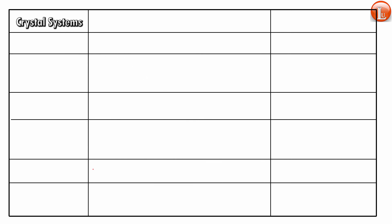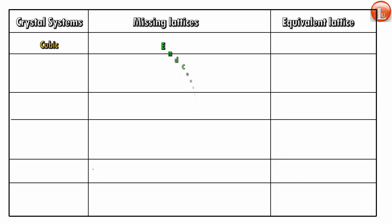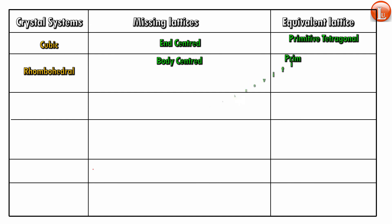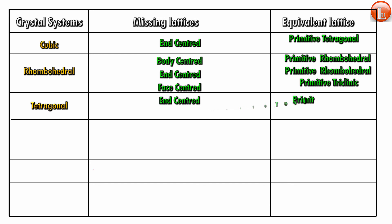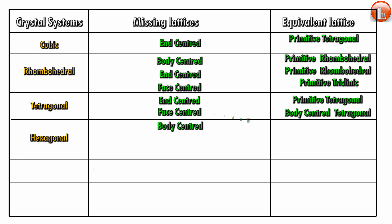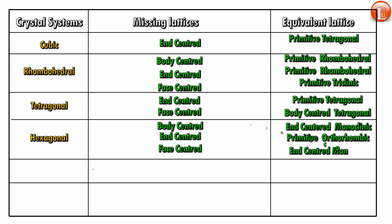Now let's see the final list of which ones are missing and what they are equivalent to. The missing lattices table covers: crystal system, missing lattice, and equivalent lattice. For cubic, the missing one is n-centered, equivalent to primitive tetragonal. Missing rhombohedral arrangements are equivalent to specific others — face-centered rhombohedral is primitive triclinic, and so on. You can pause the video once the table is shown and take down the list.